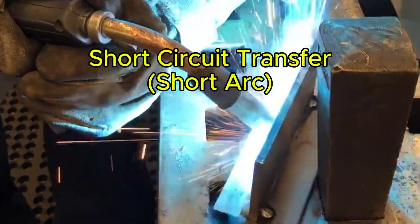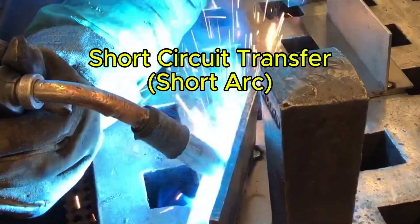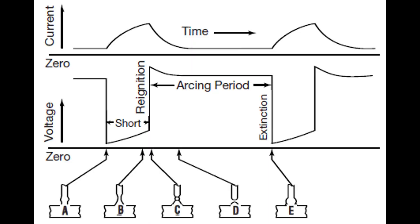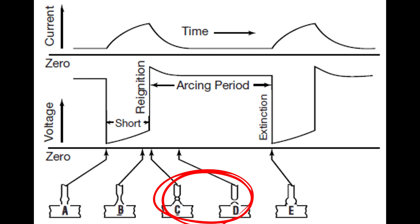First up, let's talk about short circuit transfer, often called short arc. This method involves low heat input where the metal transfers through a series of electrical shorts. The welding wire makes physical contact with the base material, creating a short. This instantly drops the voltage to zero, but because MIG welding machines are constant voltage power sources, they react immediately, increasing amperage to break that short. This process creates a mini-explosion blasting the short away and reigniting the arc.